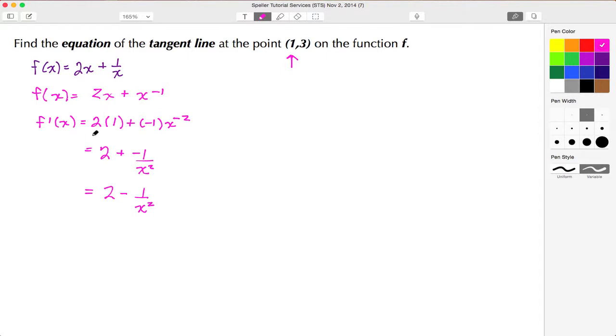So this here is the derivative. They've given me the value for x, so I'm going to input that value into the derivative. So f'(1) is equal to 2 minus 1 over 1 squared. Well, 1 squared is just 1, so this is really 2 minus 1, which tells me the derivative at this point is just 1.